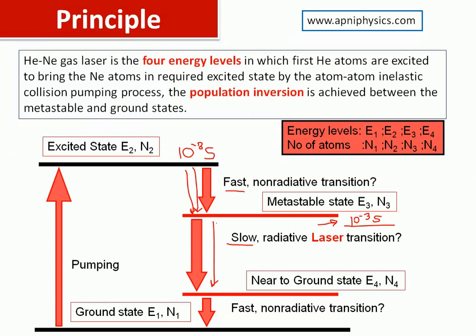All atoms immediately jump into the excited state so that transition is fast, but atoms stay in the meta-stable state longer so that transition is slow. The basis for calling a transition fast or slow is the lifetime of the state. Here the lifetime is about 10⁻³ seconds, and on that basis one can determine fast versus slow transitions. Population inversion is achieved between these two states.